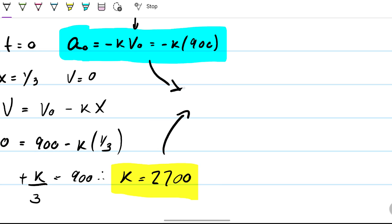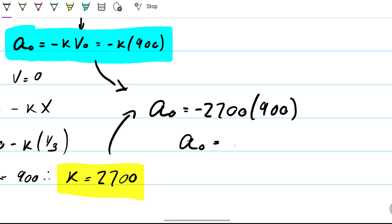Let's combine these pieces of information to figure out that a_0 is just -2700 times 900. Therefore a_0, or acceleration when time is zero, is -243,000.